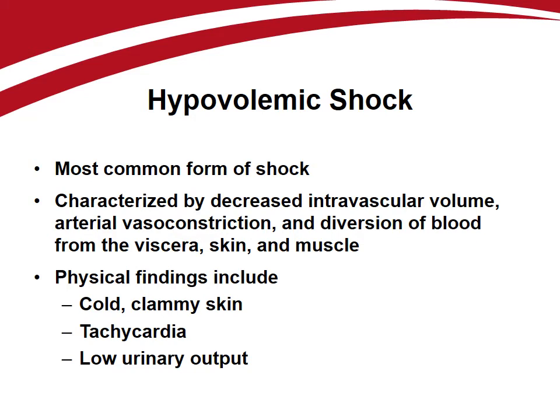Hypovolemic shock is the most common form encountered in the critically ill. Almost all forms of shock include some component of hypovolemia as a result of decreased intravascular volume or preload. The body's sympathetic response to reduced preload is arterial vasoconstriction, diverting blood from the splanchnic viscera, skin, and skeletal muscle. Physical findings include cold, clammy skin, tachycardia, and low urinary output, all a result of either hypovolemia or compensatory mechanisms.